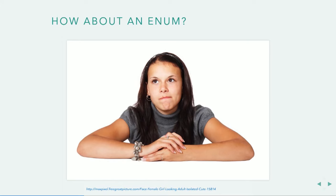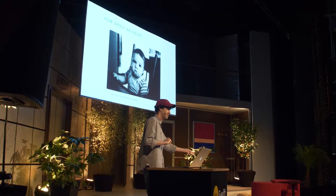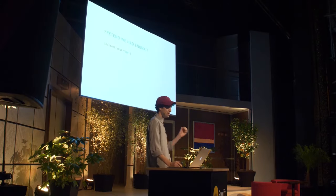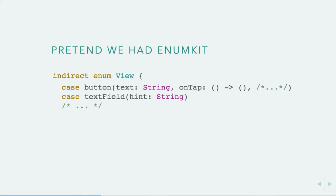But what if we had an enum instead? We didn't use subclassing — it's not going to work, but it's not going to work in a different way, and something else is going to work. So pretend we had EnumKit. EnumKit is like UIKit — it lets us compose views together, but it uses an indirect enum called View. Inside View, we have every single view we care about: a button, text field, text view, image view, stack view, table view.